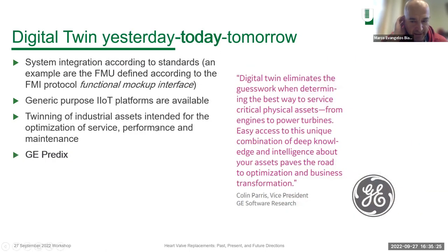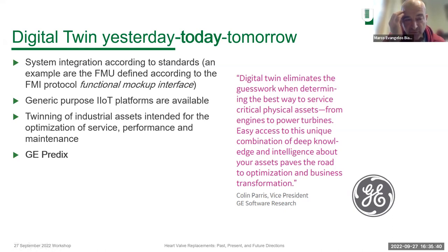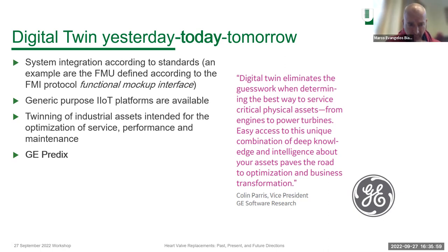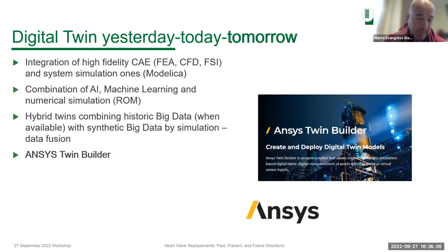Today, we are working differently because integration is becoming not something custom to design, but we have standards: functional mock-up interface and functional mock-up units. We are moving to generic-purpose IIoT — industrial Internet of Things — platforms. The twinning is something that is deployed and intended for optimization of service, performance, and maintenance. One example of twinning platform available today is the G-PRADIX platform.